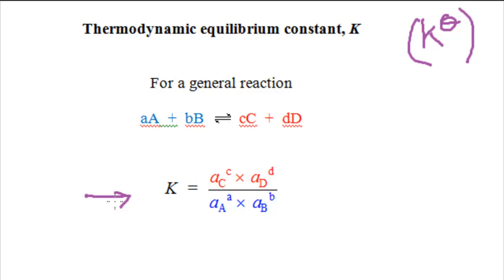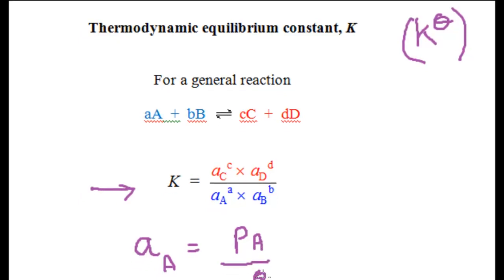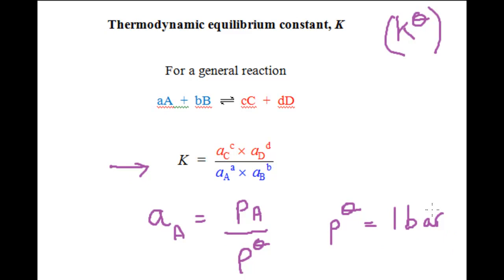For a gaseous reactant A, for example, its activity A equals its partial pressure divided by standard pressure P-standard, where P-standard equals one bar. The advantage is that activities have no units, and hence thermodynamic equilibrium constants also have no units. You don't need to use the thermodynamic equilibrium constant in this chapter — just be aware of its existence. You will use it extensively later in the book.